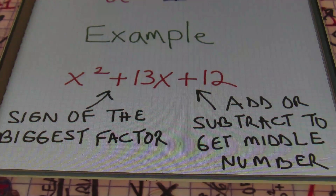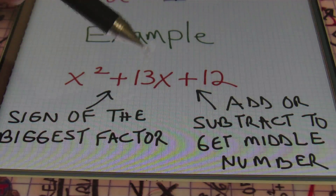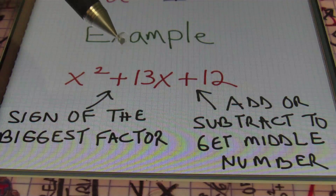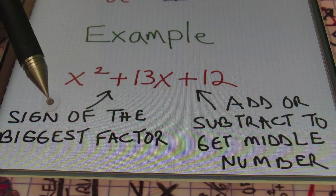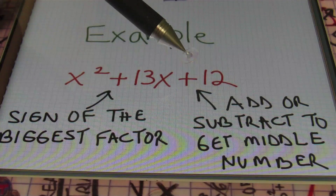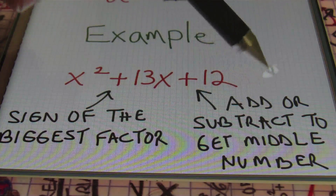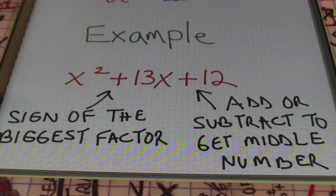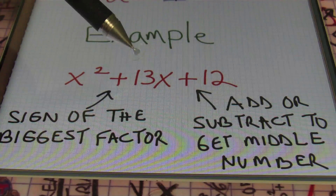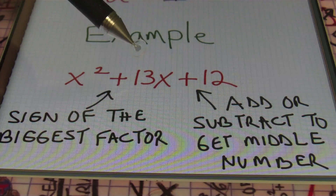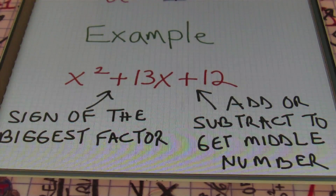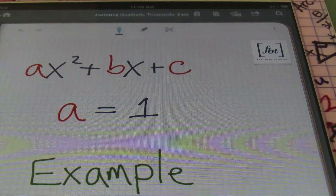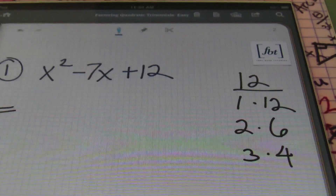If we have x² + 13x + 12, the sign of the second term determines the sign of the biggest factor. The sign of our last term will determine whether we need to add or subtract to get the middle number — that coefficient. Let's go ahead and put this into practice because that's the best way to show it.